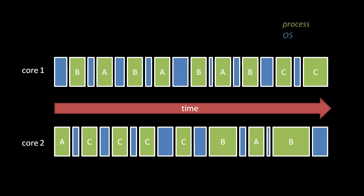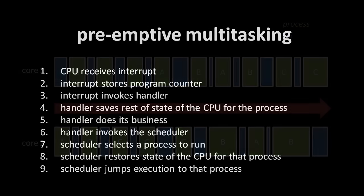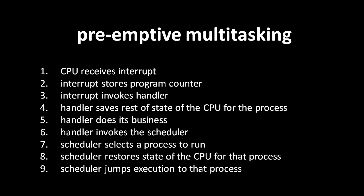The scheduler then decides what OS code to run, if any, and what process should run next. This scheme, called preemptive multitasking, works like this.